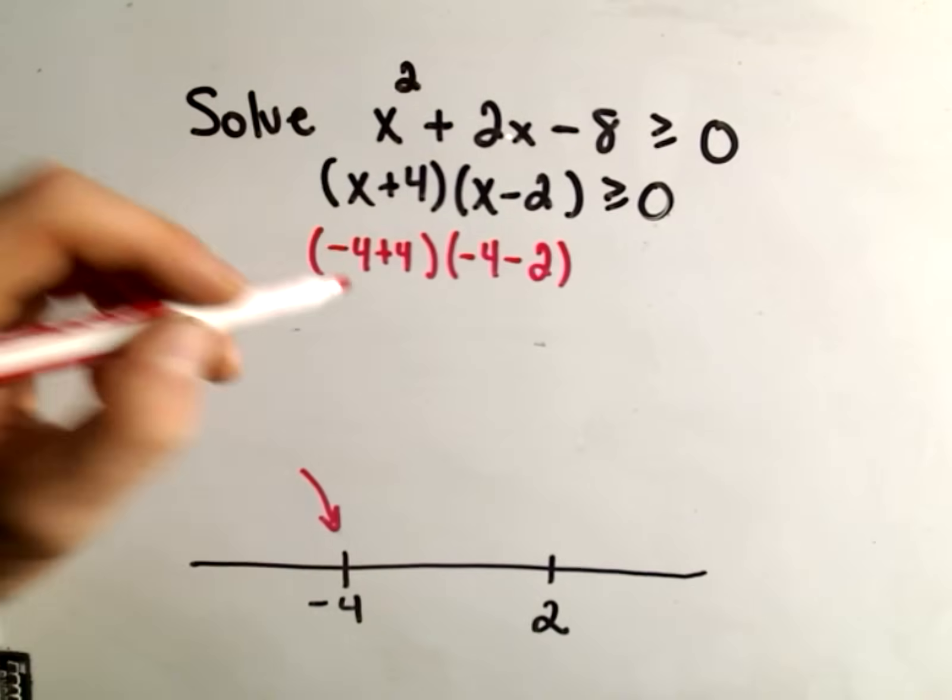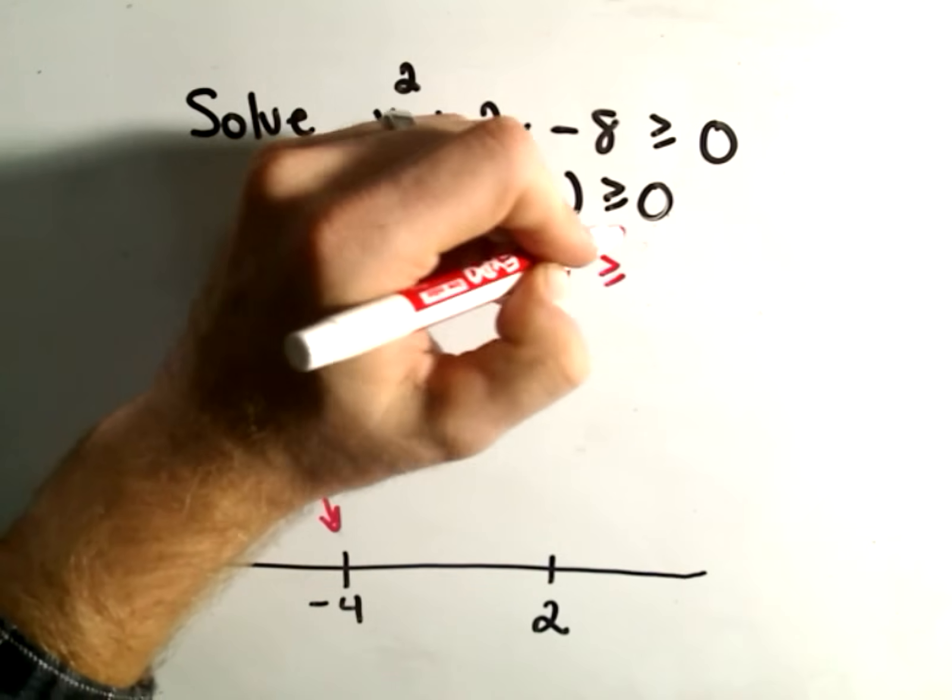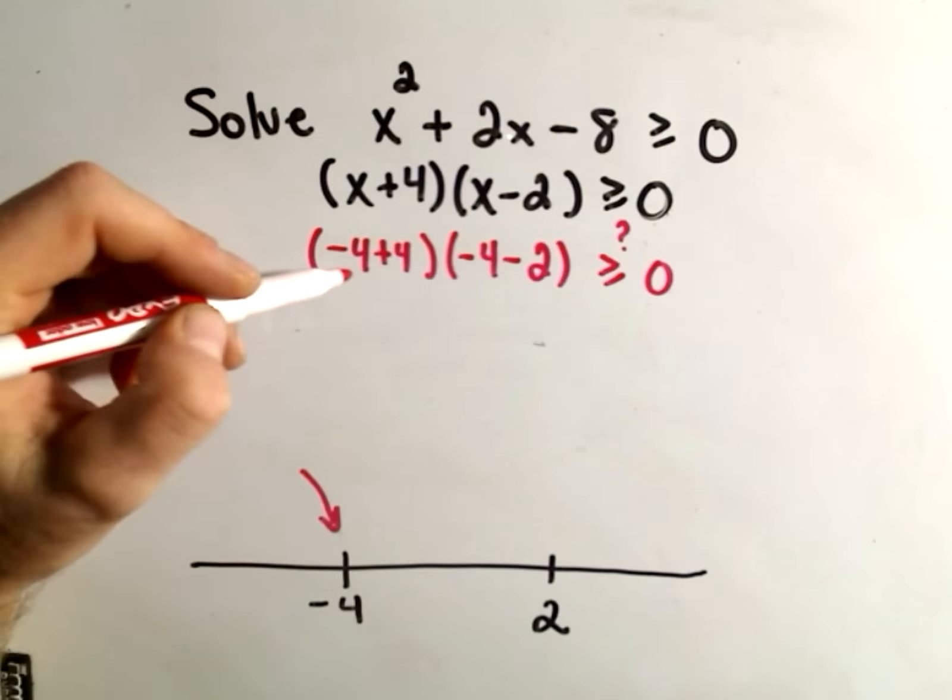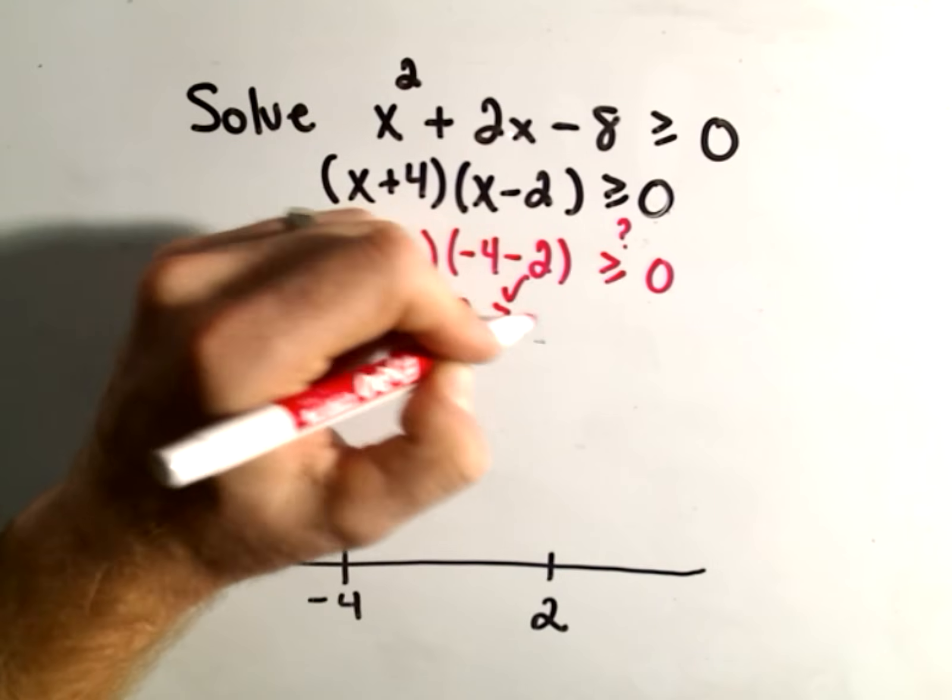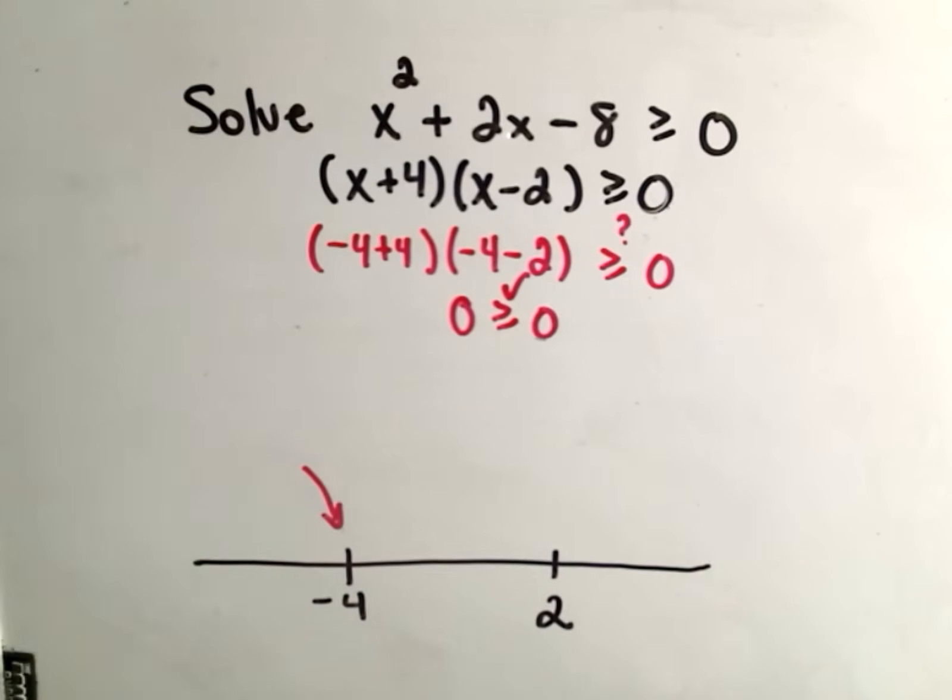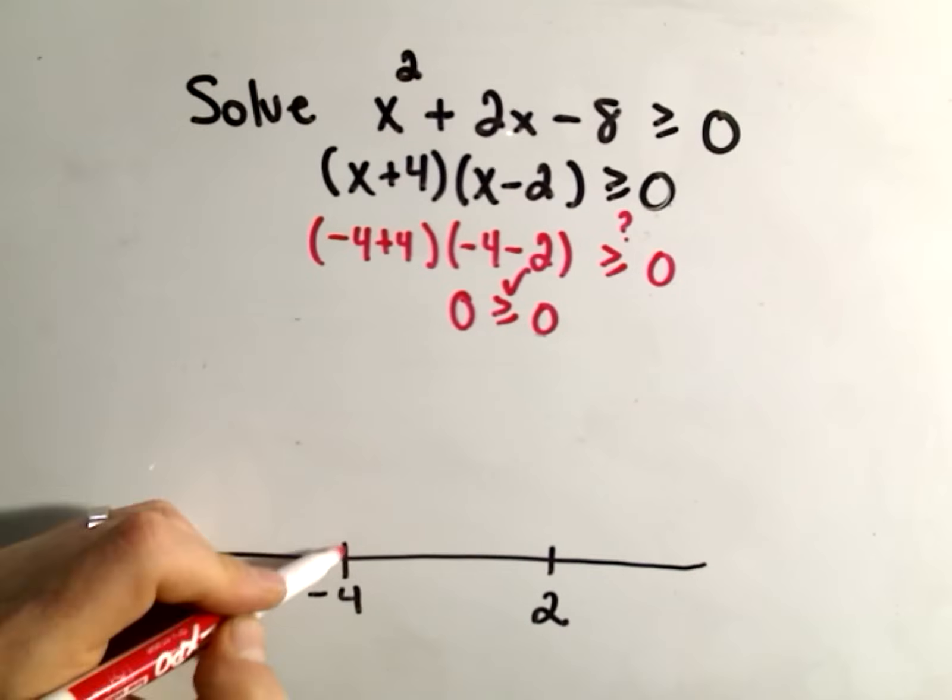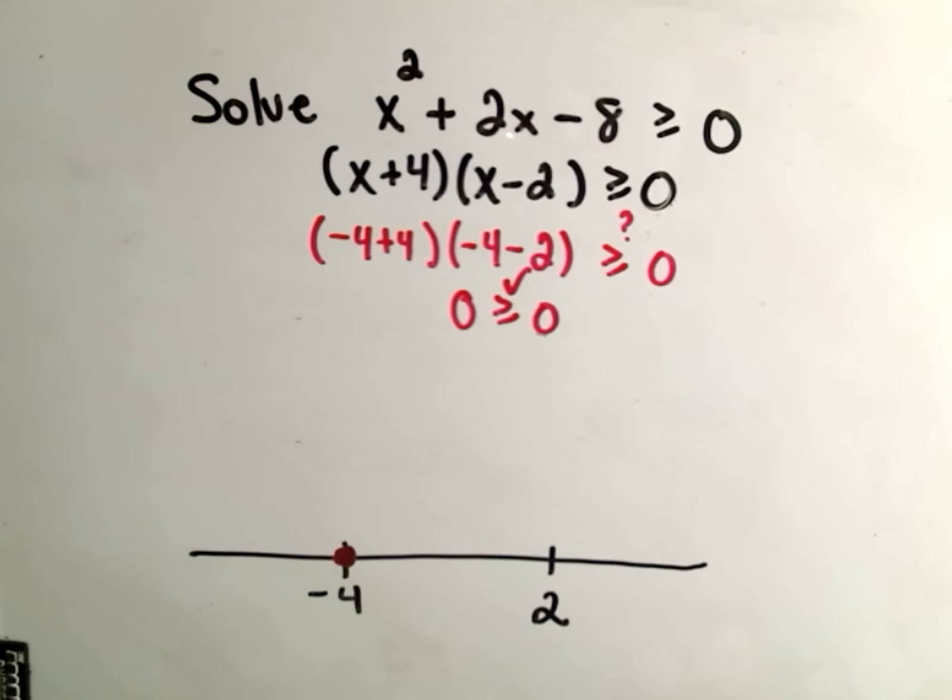Negative 4 minus 2. Well, is that greater than or equal to 0? Well, on the first part, you get 0. Well, 0 times anything is 0. So certainly 0 is greater than or equal to 0. So I'm going to shade it in to indicate that that point works.